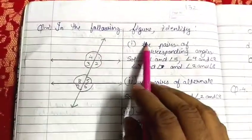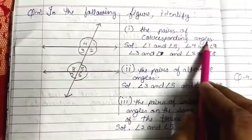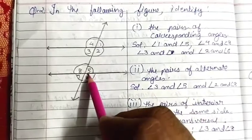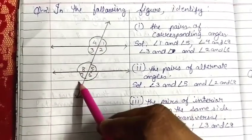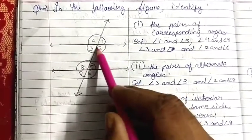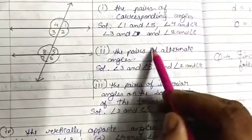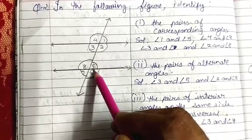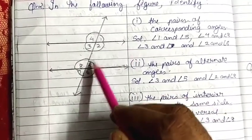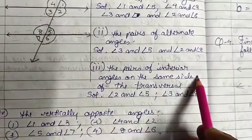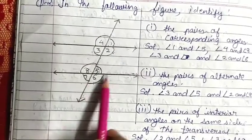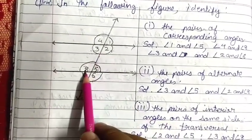Question 2: Identify the pairs of angles. For corresponding angles (F-like structure): angle 1 corresponds to angle 5, angle 4 corresponds to angle 8, angle 3 corresponds to angle 7, and angle 2 corresponds to angle 6. For alternate angles (Z-like structure): angle 3 alternates to angle 5, and angle 2 alternates to angle 8. For co-interior angles: angle 2 and angle 5 are co-interior, and angle 3 and angle 8 are co-interior.